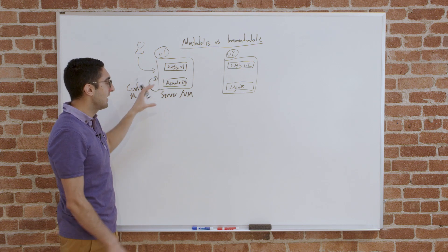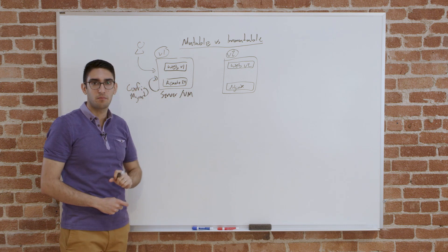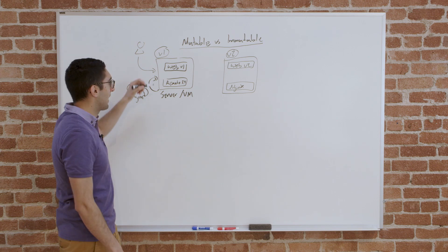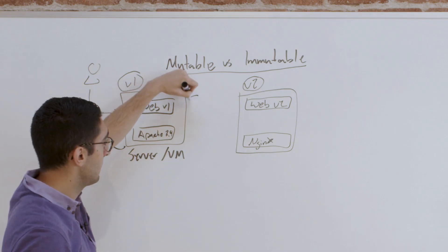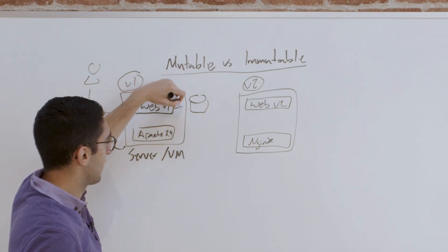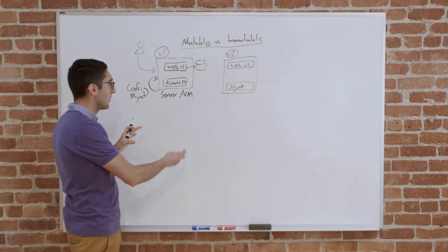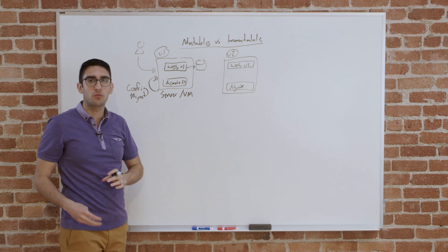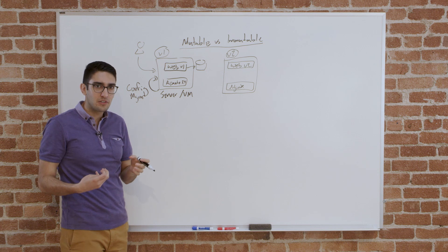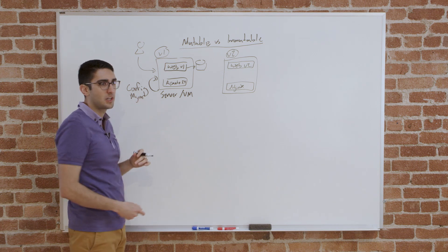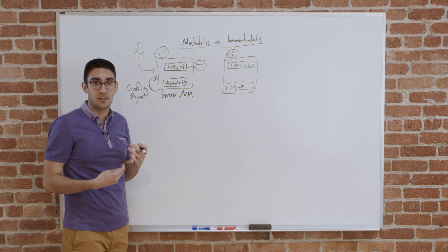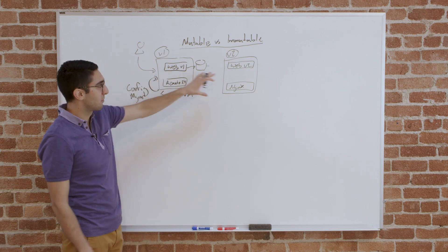So typically, this is going to be done with something like configuration management. So we have a configuration management tool. This could be Chef, Puppet, Ansible, something like that. So we're going to run the config management the first time around to make the world look like this. And then we'll rerun it, once we've updated our definition, to go from version 1 to version 2.